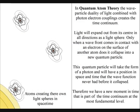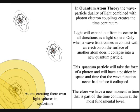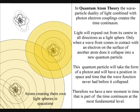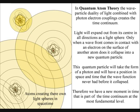Each expanding wavefront will create a probability of a future event. When a wavefront comes in contact with another atom, the wave-particle duality of the light will collapse. This will create a new quantum particle in space, and a new moment in time, that will be part of the curvature of space-time.